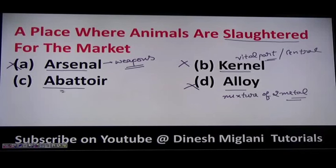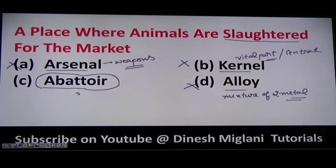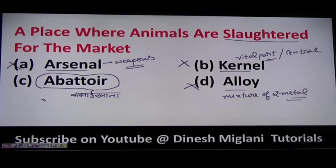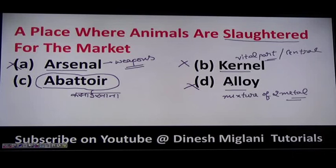Hence the answer is abattoir — a place where animals are slaughtered for the market. This is primarily known as 'kasai khana' in Hindi, where animals are killed for selling in the market. So in this question we understood four words: arsenal (place where weapons are kept), kernel (vital/central part), alloy (mixture of two metals), and abattoir (kasai khana).